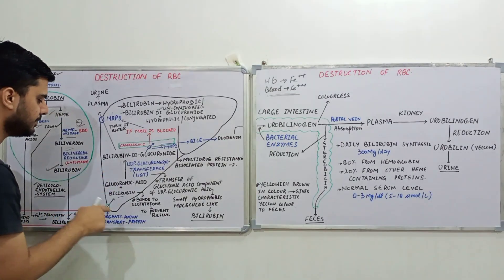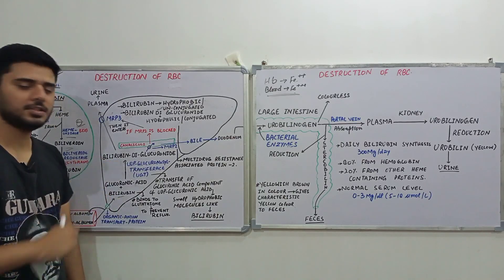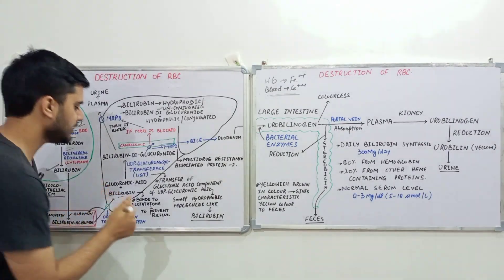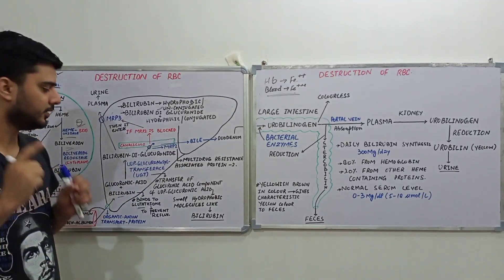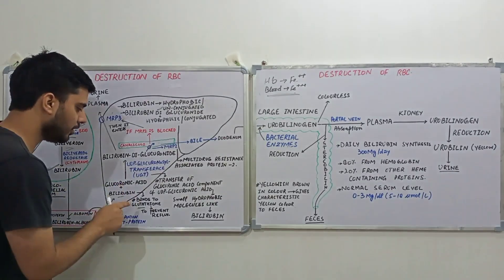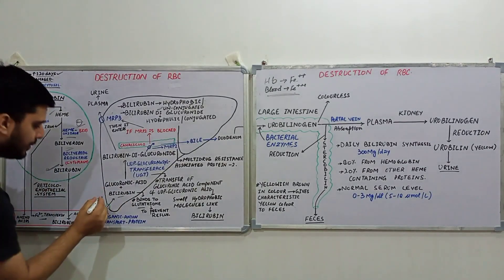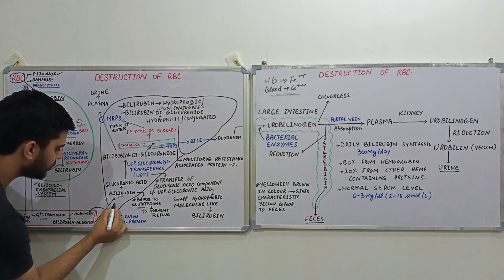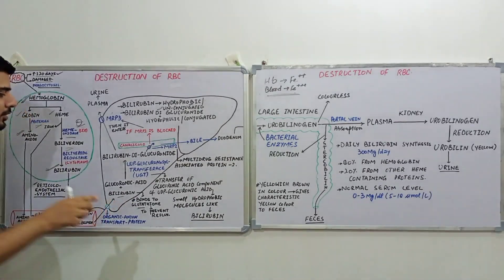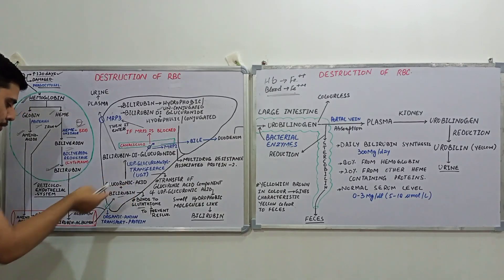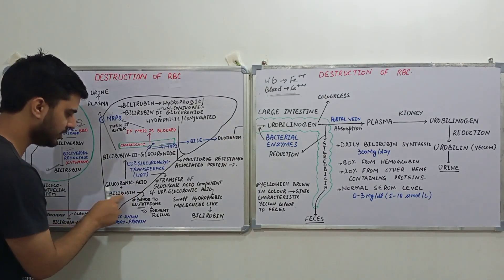As bilirubin enters the hepatocytes, it attaches to glutathione. This is important because glutathione prevents the reflux of bilirubin back into the blood. Without this attachment, bilirubin could be transported back into the blood; however, by binding to glutathione, it is retained within the hepatocytes.